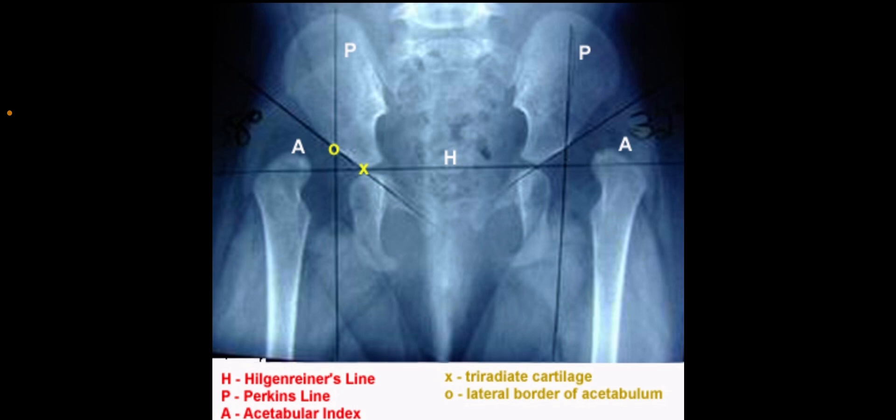Acetabular index: angle formed by Hilgenreiner's line and a line from a point on the lateral tri-radiate cartilage to a point on the lateral margin of the acetabulum. Should be greater than 25 degrees in patients older than 6 months.